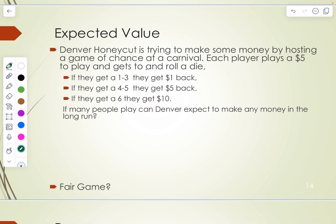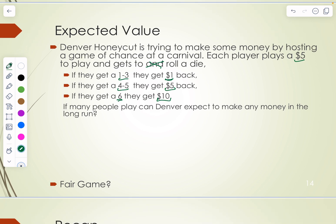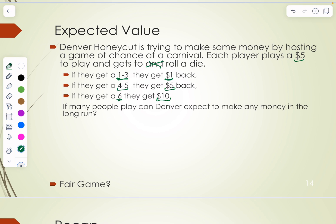The last thing to discuss is expected value in an application. Denver Honeycutt is trying to make money hosting a game of chance at a carnival. Each player pays $5 to play and gets to roll a die. If they roll a 1, 2, or 3, they get $1 back. If they roll a 4 or 5, they get their $5 back. If they roll a 6, they get $10 — meaning they net $5 total. If many people play, can Denver expect to make money in the long run?